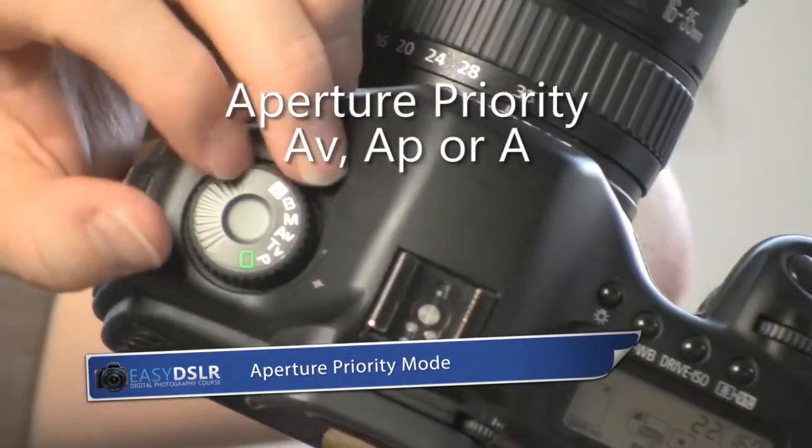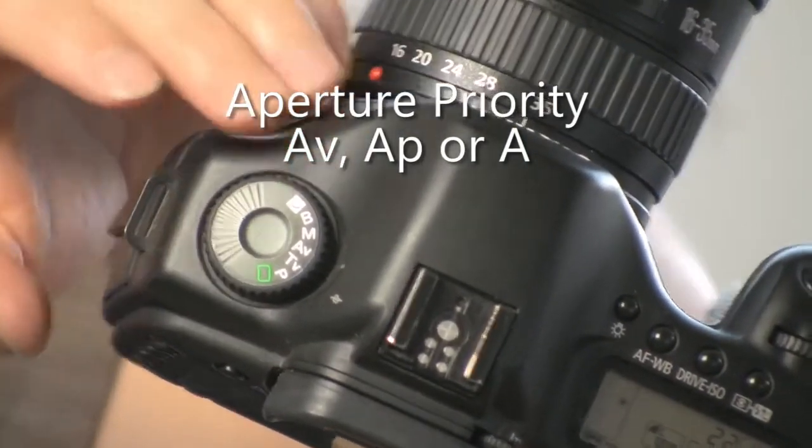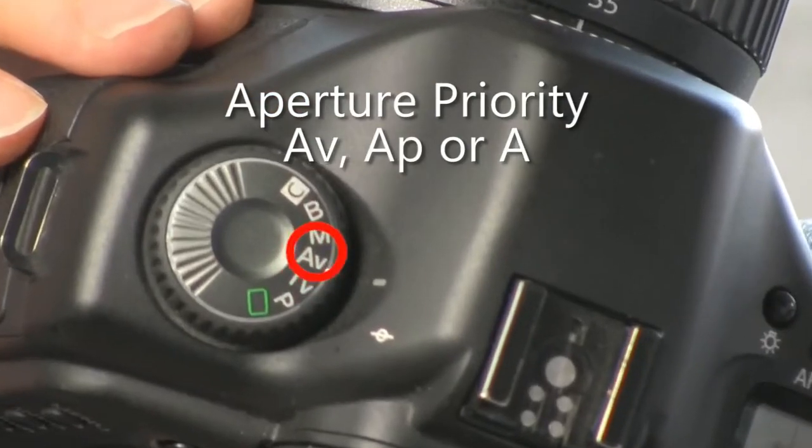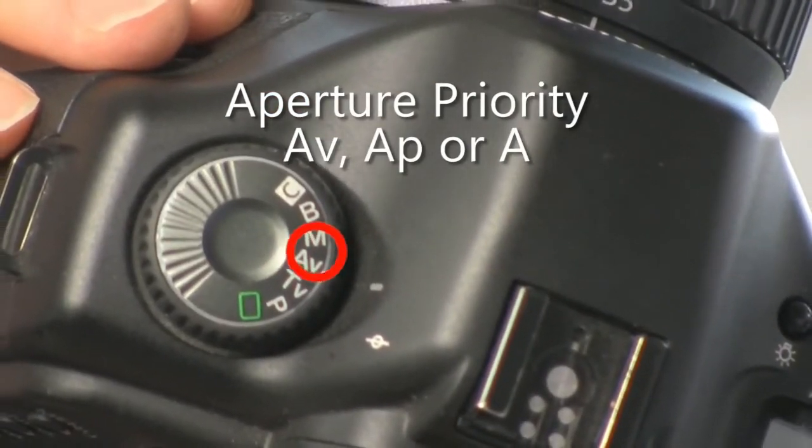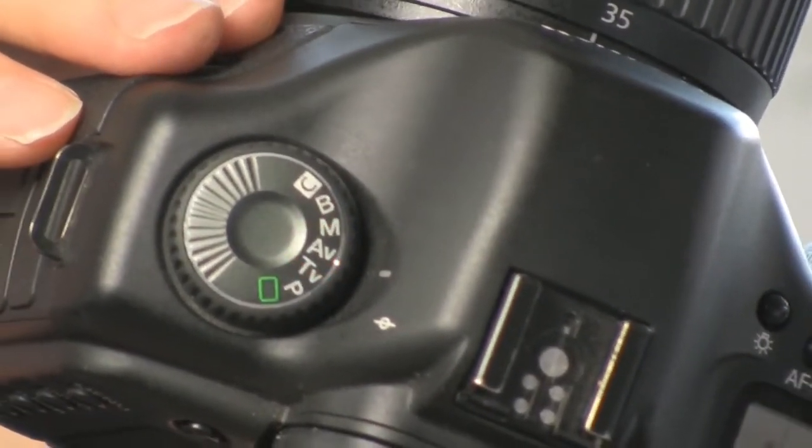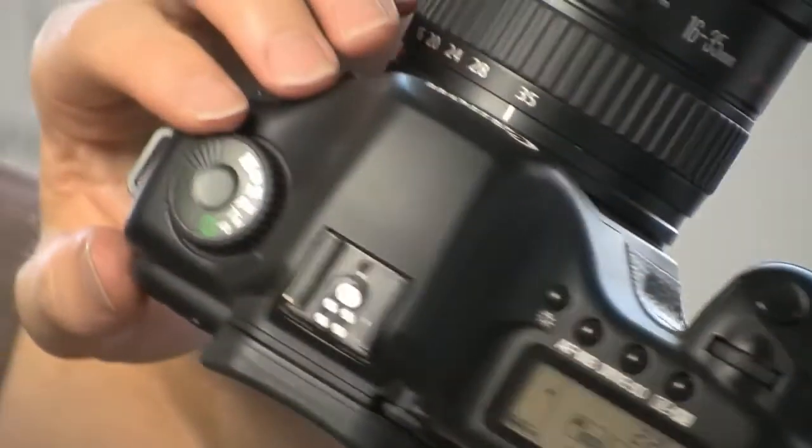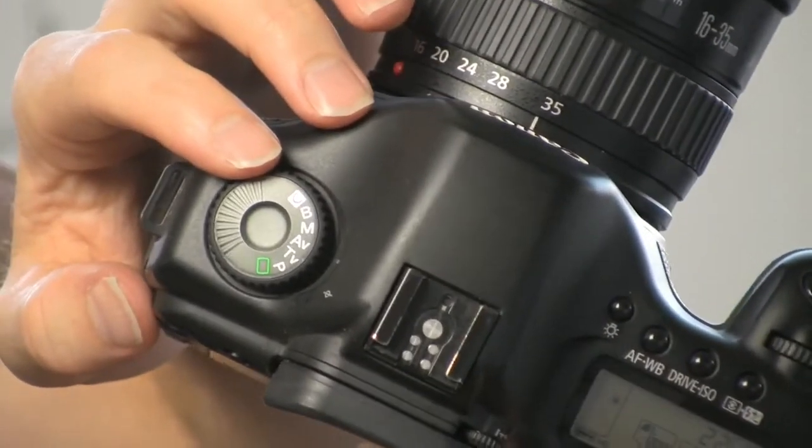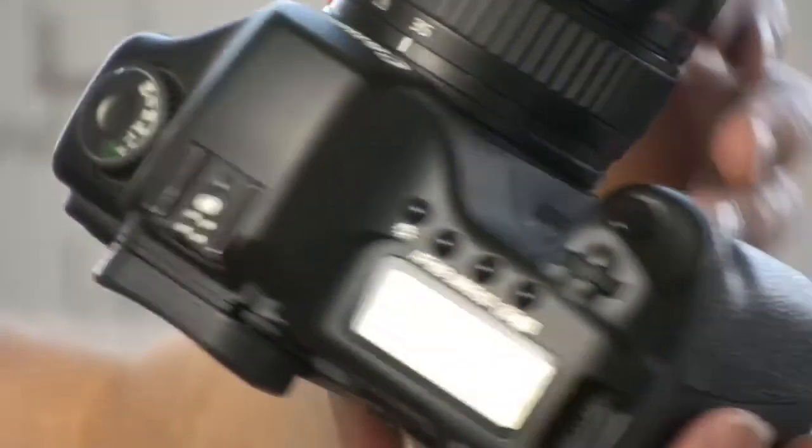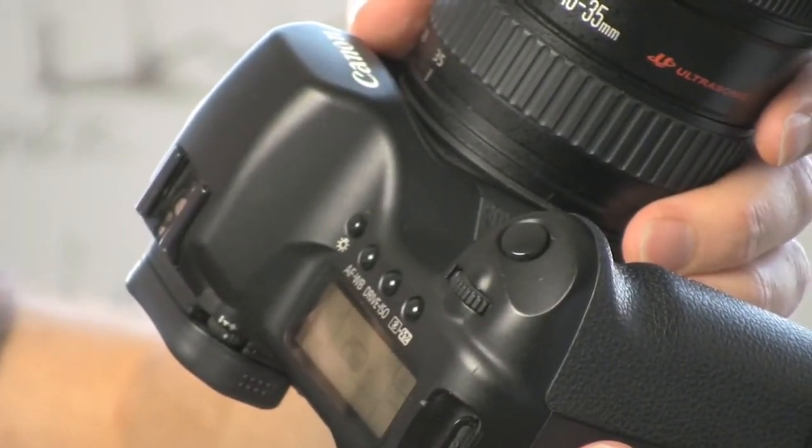Now in your camera manual it'll tell you exactly what it's called. It's usually A or AP, aperture priority, or sometimes AV, aperture value, in the case of the cannons here. And now this is our first step beyond shooting on auto all the time.